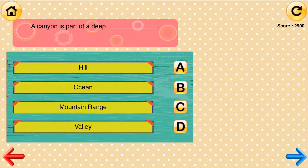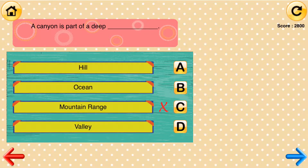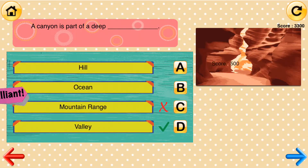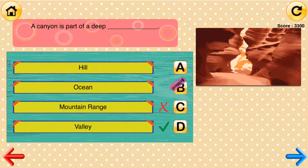Quiz question: A canyon is part of a deep blank. The answer choices are hill, ocean, mountain range, and valley. The correct answer is valley.